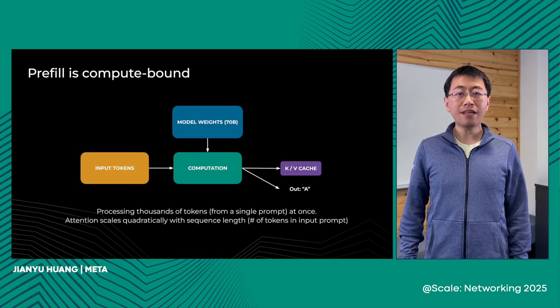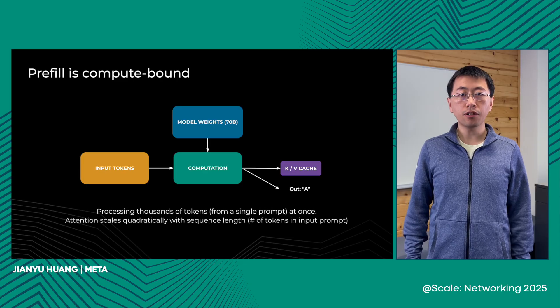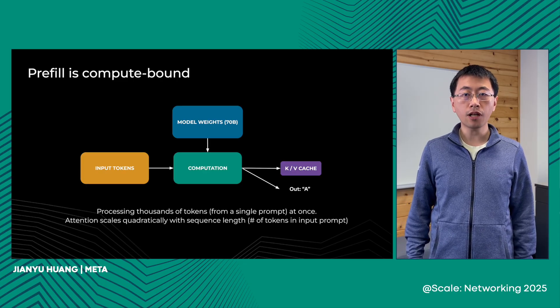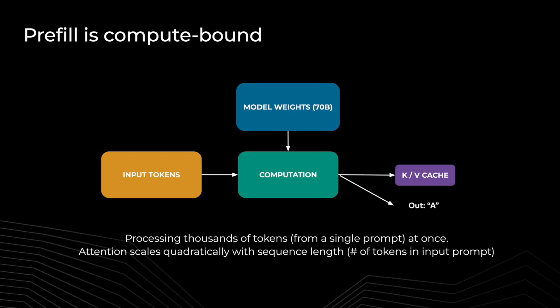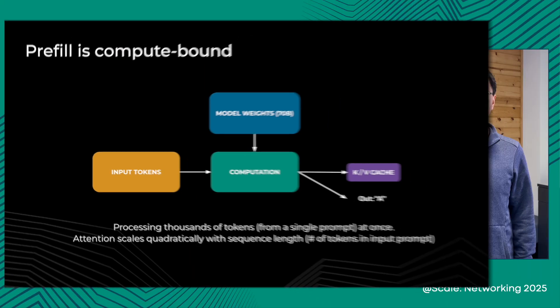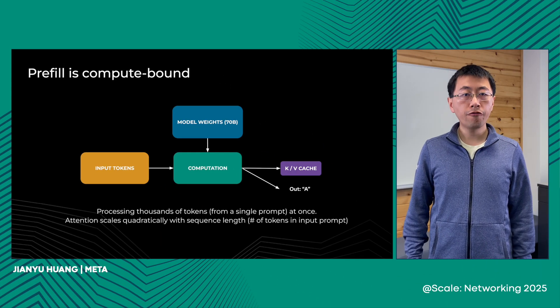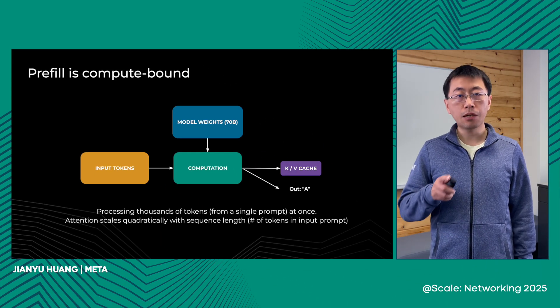The prefill stage processes a single prompt sequence of thousands of tokens at once, generating the key-value cache, or KV cache, for each transformer layer of the large language model. Note that the attention might scale quadratically with sequence length. Overall, prefill is compute-bound.